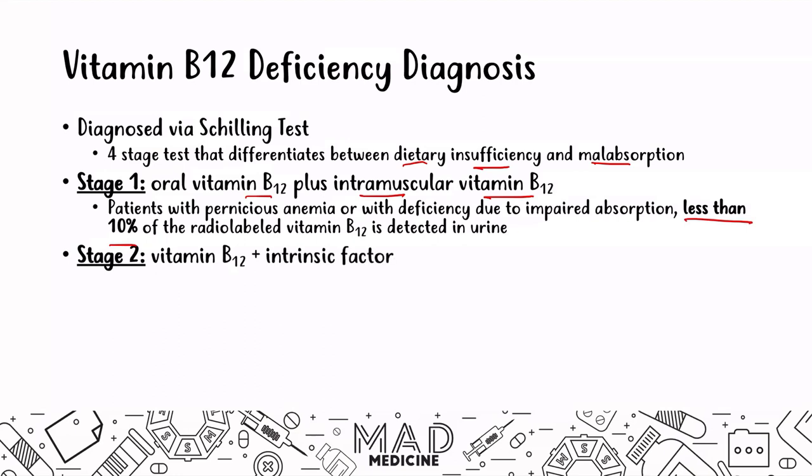In stage two, vitamin B12 is given with intrinsic factor. Intrinsic factor is used to identify any intestinal absorption problems. Essentially, if there's an issue with the stomach not producing proper intrinsic factor levels, providing exogenous IF will allow vitamin B12 to be absorbed in the gut. However, if you give IF and vitamin B12 but there is still not a proper vitamin B12 level in circulation, that means the absorption problem lies in the intestines rather than in the stomach.